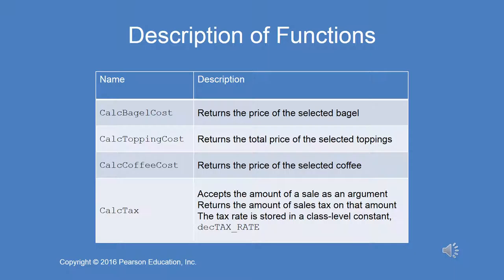The tax rate is stored in a class-level constant called decimal tax rate. Whenever you have a tax rate, you want that as a class-level constant. So if the tax rate changes — which does happen — you just go in and change that one class-level constant and the program will then calculate the new tax rate from that point on.